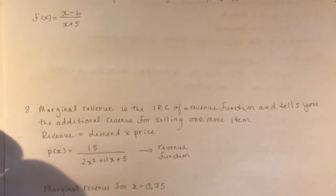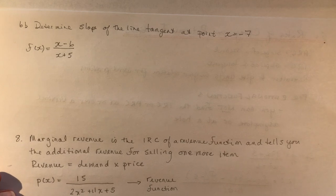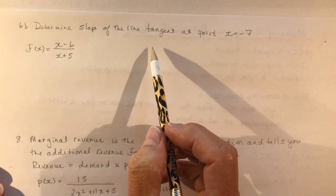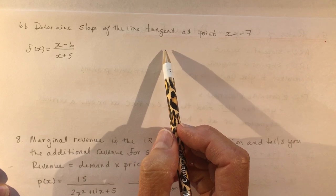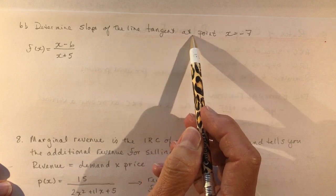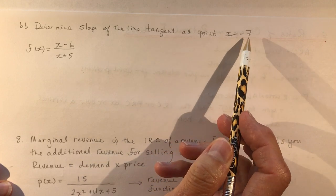So let's go on to determine the slope of the line, so the slope of the line now, so sometimes they change the wording, but it really means the very same thing. What is the slope of the line tangent at the point x equals minus 7?